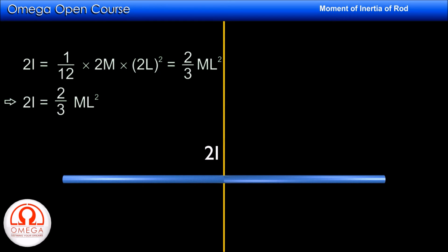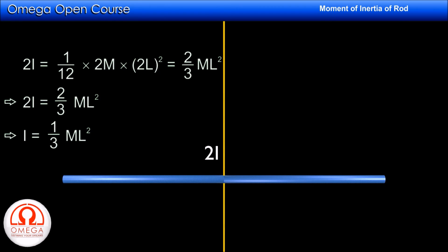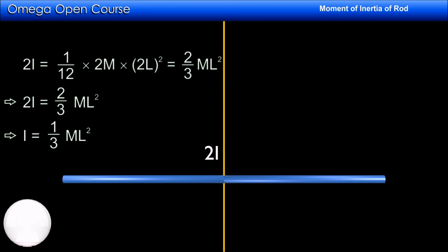This implies 2I = (2/3)ML², or I = (1/3)ML². Thus the moment of inertia of a rod about an axis perpendicular to the rod and passing through one of its ends is (1/3)ML².